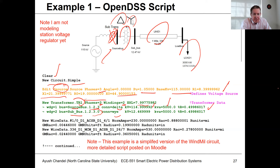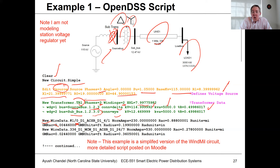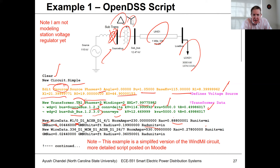Now I'm defining information for my line model. I'm specifying new wire data and loading in data for a 1-aught conductor. The name comes from the Windmill export: '1aught_D1_ACSR_D1_6slash1.' You can give it the current limit, AC resistance, GMR, and units in feet. You can give it the radius and units of the radius. This is a simplification of the original Windmill circuit — I just didn't want to get into too much detail in this script. The full detail is on Moodle.